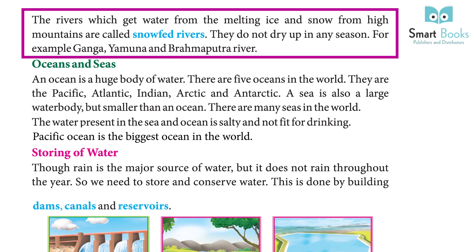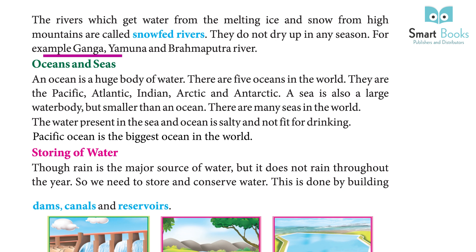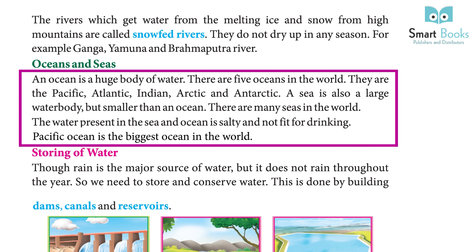The rivers which get water from the melting ice and snow from the high mountains are called snow-fed rivers. They do not dry up in any season. For example: Ganga, Yamuna, and Brahmaputra rivers. An ocean is a huge body of water. There are five oceans in the world: the Pacific, Atlantic, Indian, Arctic, and Antarctic. A sea is also a large water body but smaller than an ocean. The water in seas and oceans is salty and not fit for drinking. The Pacific Ocean is the biggest ocean in the world.